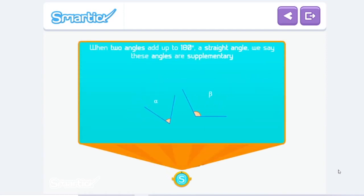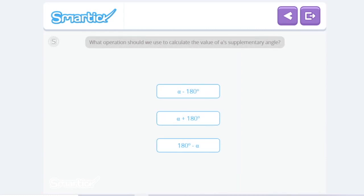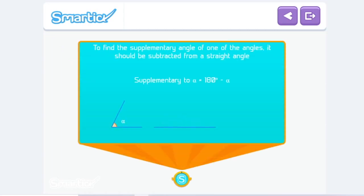When two angles add up to 180 degrees, a straight angle, they are called supplementary angles. What operation should we use to find the supplementary angle of a specific angle, like alpha? So I would think it would be 180 degrees minus alpha. Let's see. That's it! To find the supplementary angle of one specific angle, we need to subtract the angle from the straight angle. It will always be less than a straight angle.